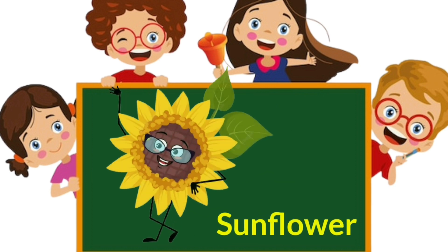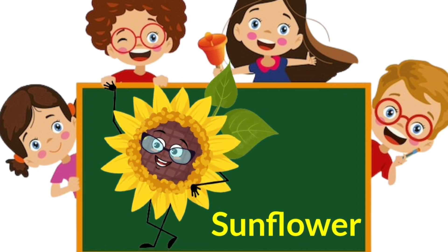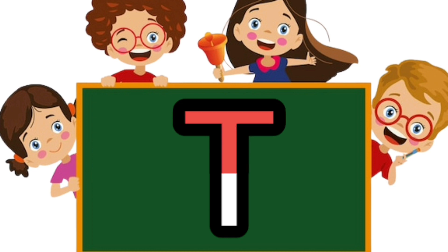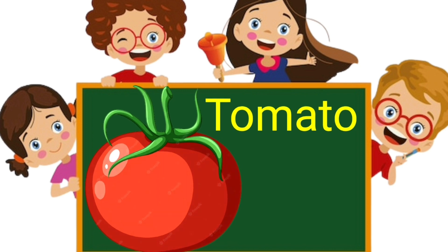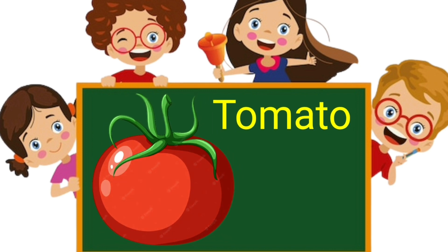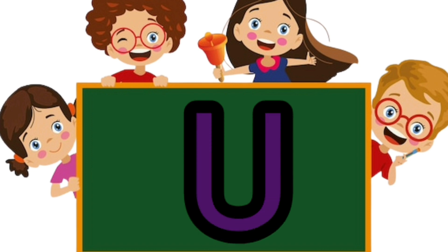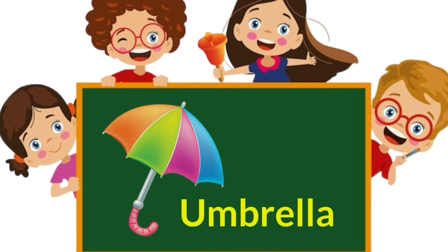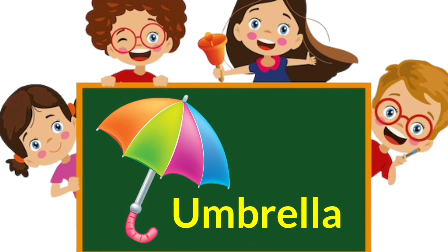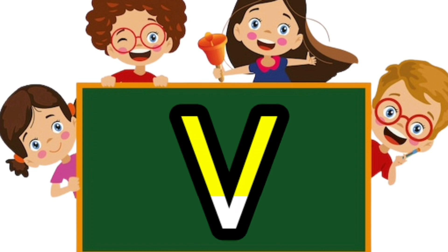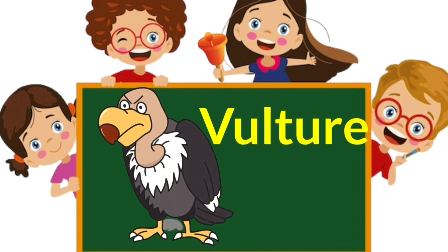S. S is for Sunflower. T. T is for Tomato. U. U is for Umbrella. V. V is for Vulture.